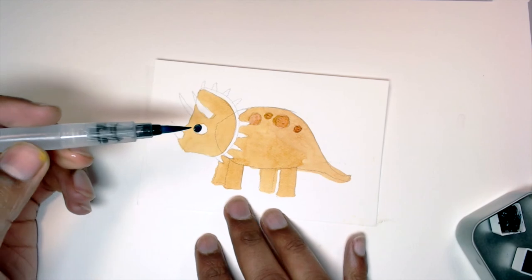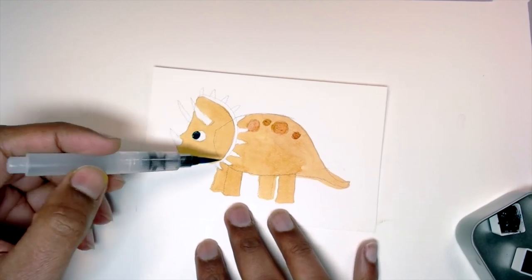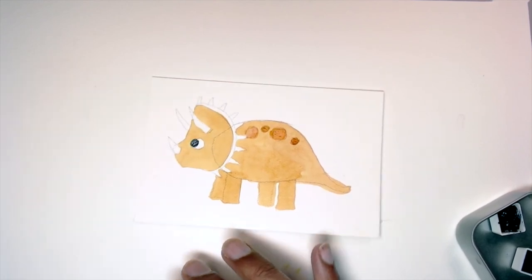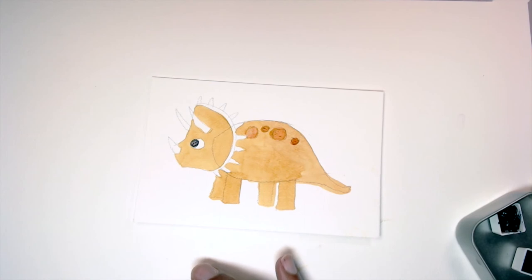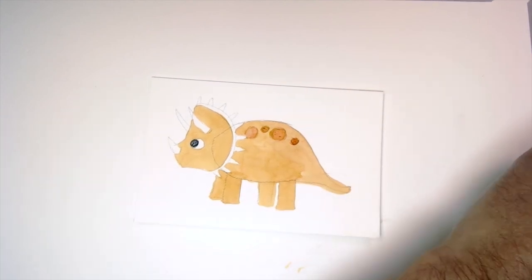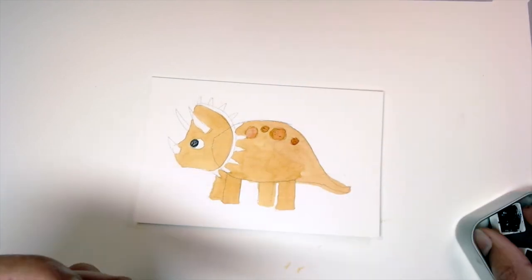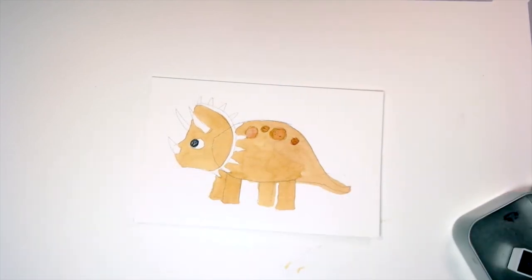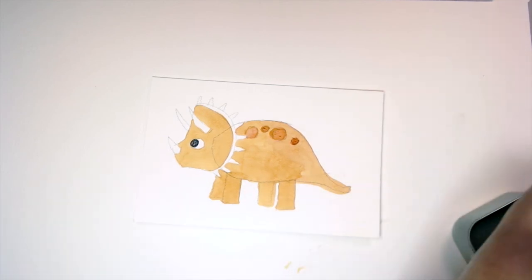And then I'm going to go ahead and start doing those horns and spikes. So I'm going to use the same black I just mixed, but get plenty of water because I don't want it to be too dark.